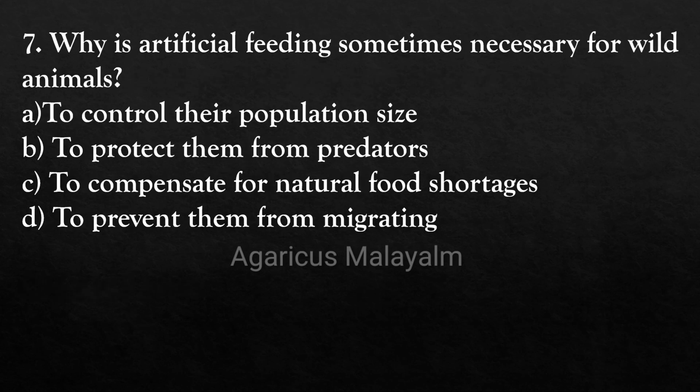Seventh question: why is artificial feeding sometimes necessary for wild animals? Answer options: option A, to control their population size; option B, to protect them from predators; option C, to compensate for natural food shortages; option D, to prevent them from migrating.